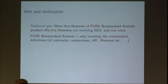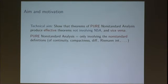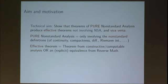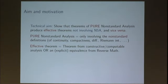What do I mean by these things? Pure non-standard analysis involves only the non-standard definitions of continuity, compactness, differentiation, Riemann integration, and so on — throw the epsilon-delta out of the window. An effective theorem is what you think it is: a theorem from constructive or computable mathematics, or if that's impossible, some explicit or effective equivalence from reverse math. I'll show you a machine where you throw in a proof of a pure non-standard analysis theorem, and out comes, if you're lucky, constructive or computable analysis, otherwise some classification from reverse math.